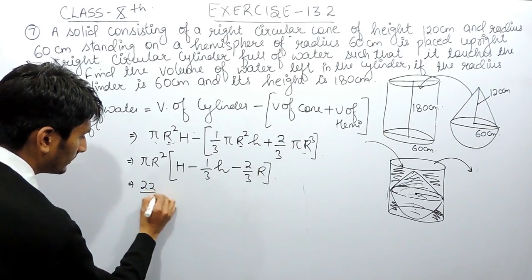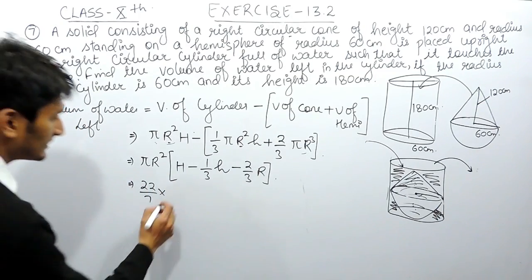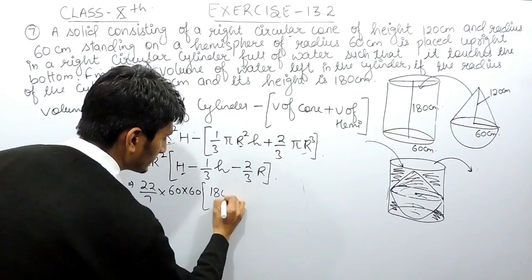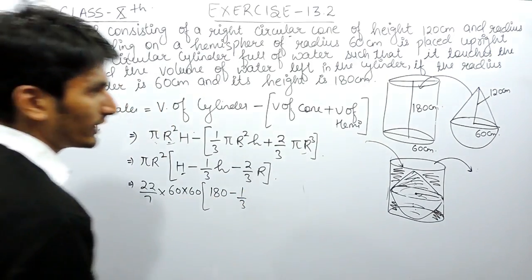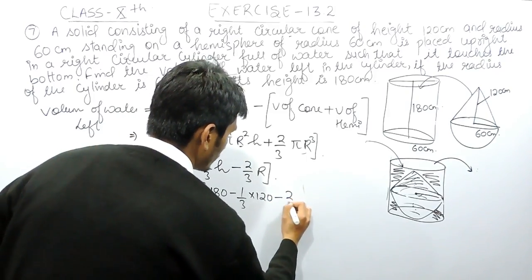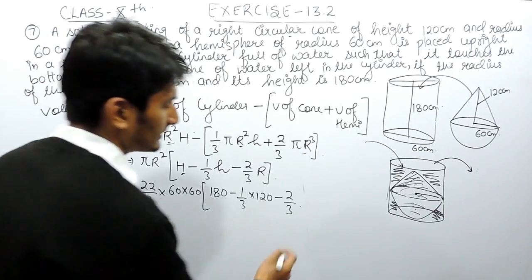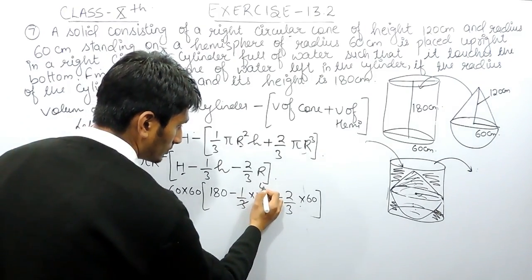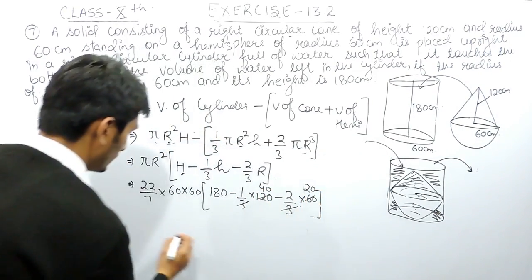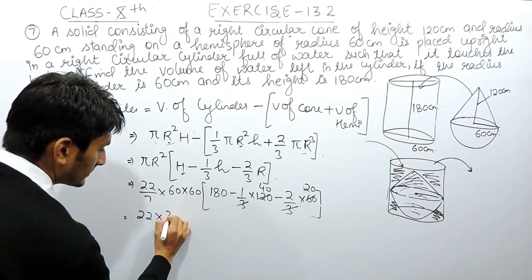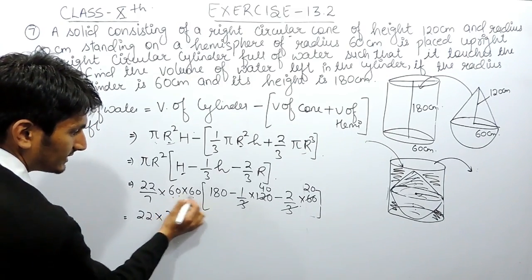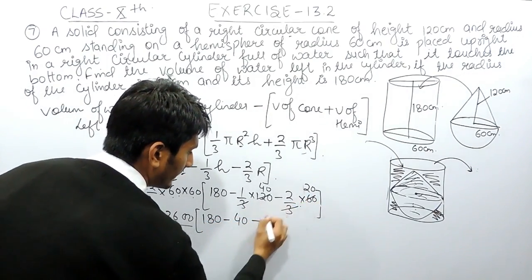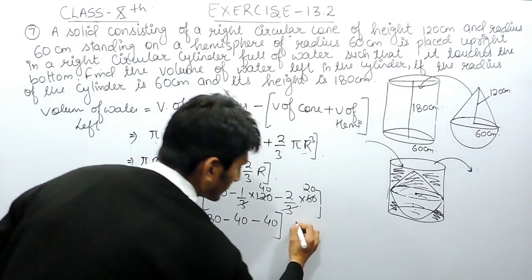The value of π is 22/7. The radius is 60 centimeters, so r² = 60 × 60. The height of the cylinder is 180 centimeters; the height of the cone is 120 centimeters; and the radius for the hemisphere term is 60 centimeters. After cancellation — 3 cancels into 60 giving 20, and again giving 40 — we get: 22 × 3600 / 7 × (180 − 40 − 40).